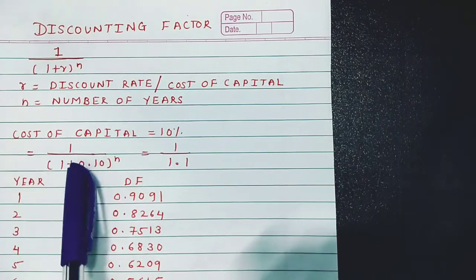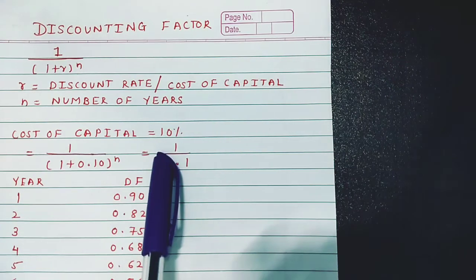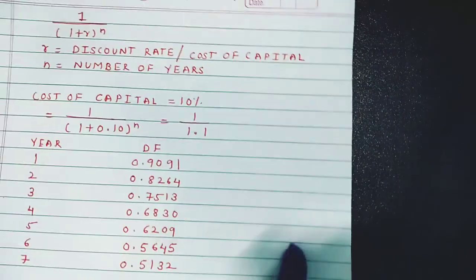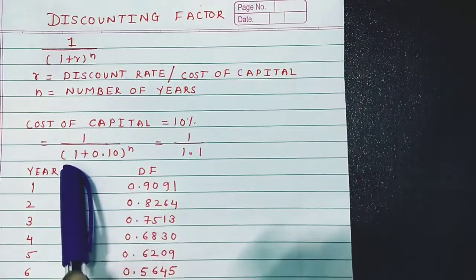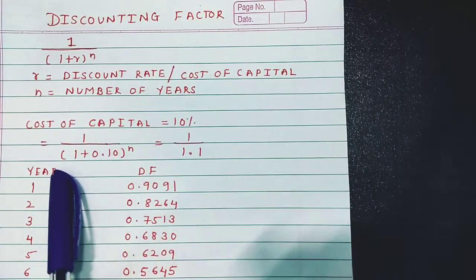the cost of capital is 10 percent. How do we compute the discounting factor for several years? We apply the same formula: 1 divided by (1 + r).